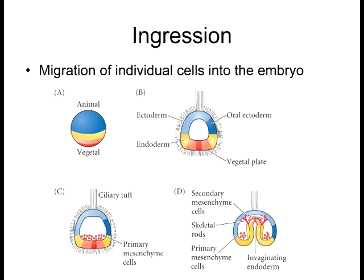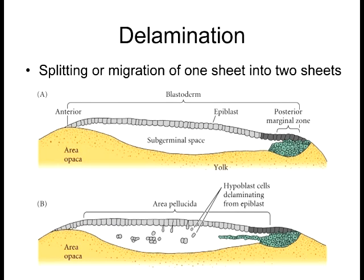Ingression is when you get what's called an epithelial-to-mesenchyme transition. In the initial stages of sea urchin development, cells pull away from their layer and migrate inwards — that's ingression. You get migration of individual cells that have broken free from the epithelial layer and migrate to a particular area.